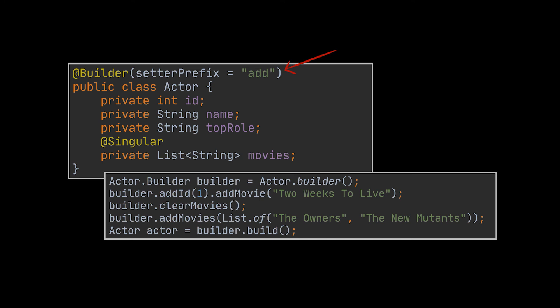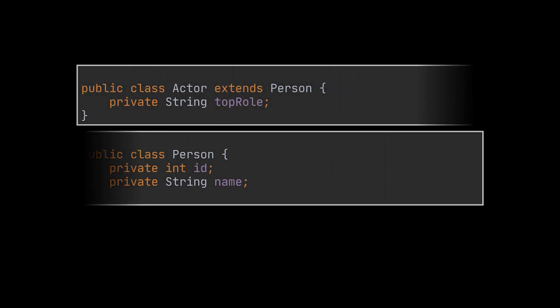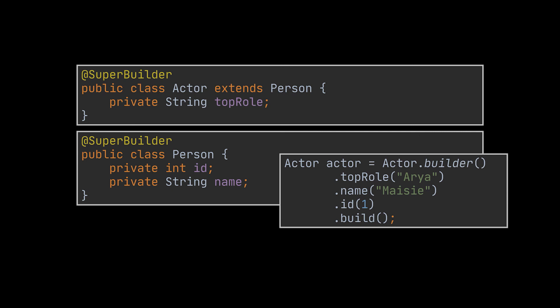What if we have two classes inheriting from one another — the Person and Actor classes for instance? Does the builder provide a callSuper-like argument? No, it doesn't, and that is one of the downsides of @Builder. That is also why we have the @SuperBuilder annotation. This annotation works perfectly well with fields from parent classes; however, its customization possibilities are limited compared to @Builder, and it requires all superclasses to also have the @SuperBuilder annotation.